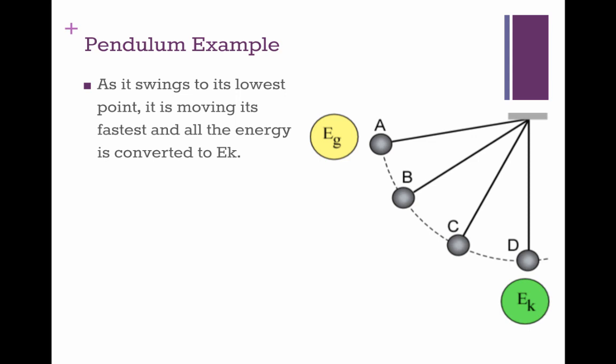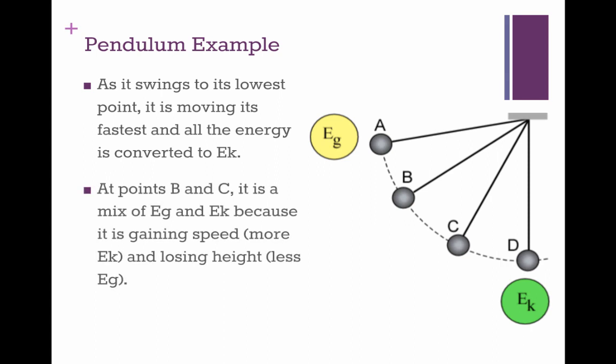So in this pendulum example, as it swings to its lowest point, it is moving its fastest, and all the energy is converted into Ek. That means it's going to change from Eg to Ek. So at points B and C, it's going to be a mix of Eg and Ek, because it's gaining speed, more Ek, and losing height, less Eg. So B might look like this, and C might look like that, where the Ek is getting bigger, and the Eg is getting smaller.